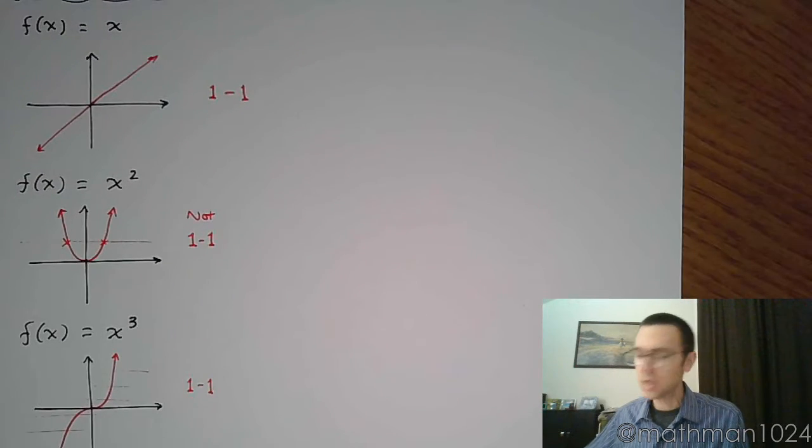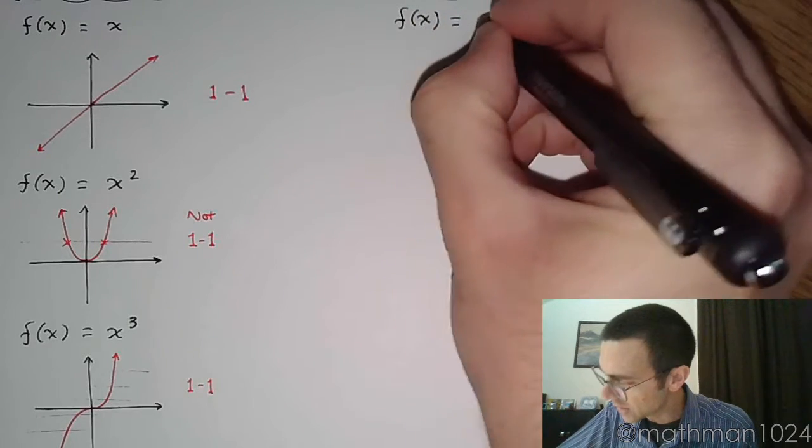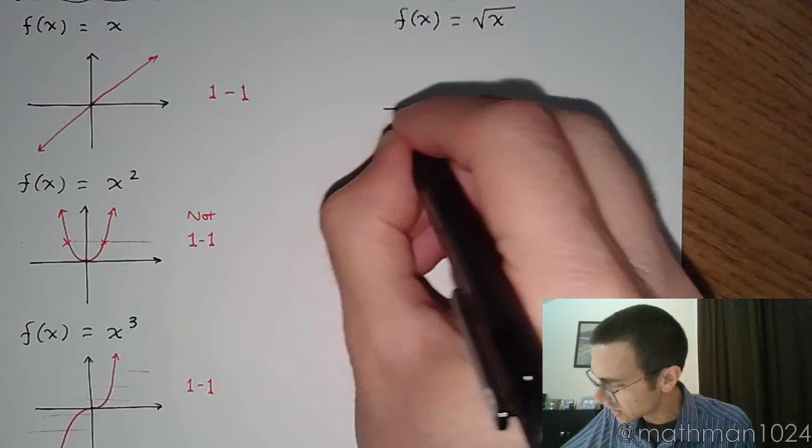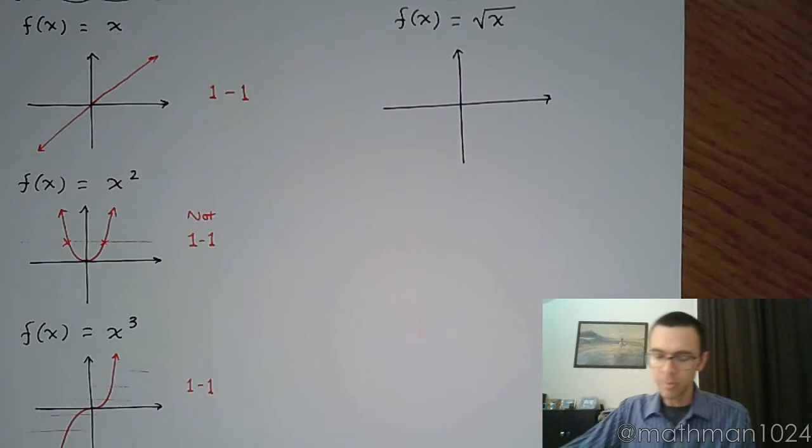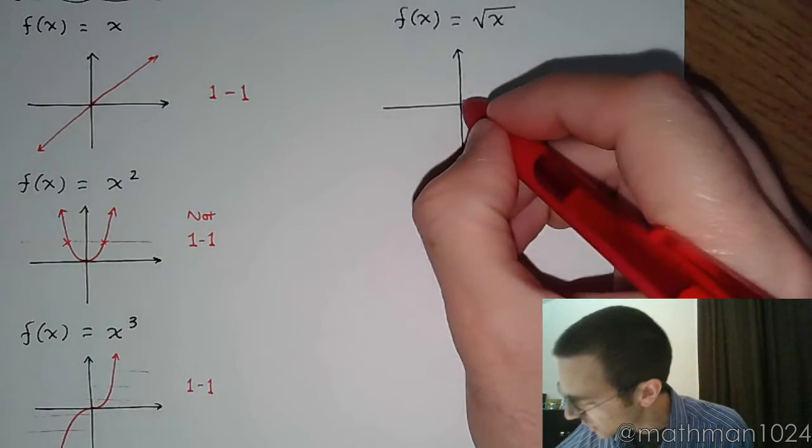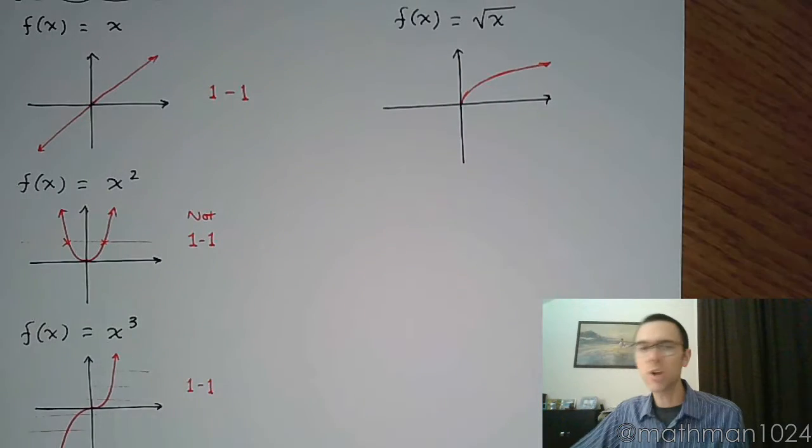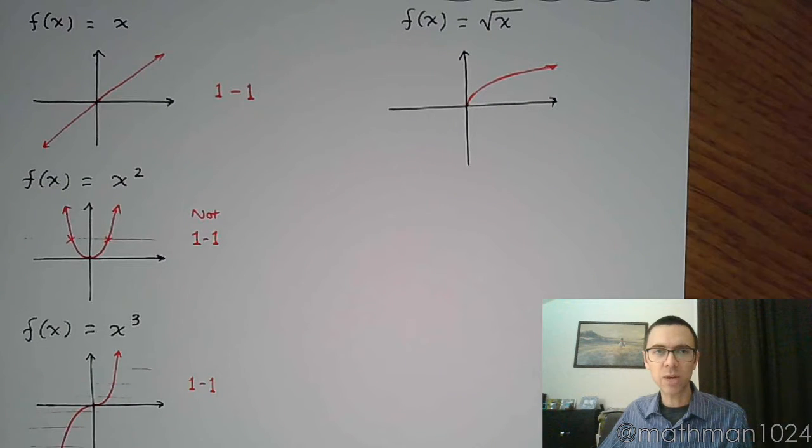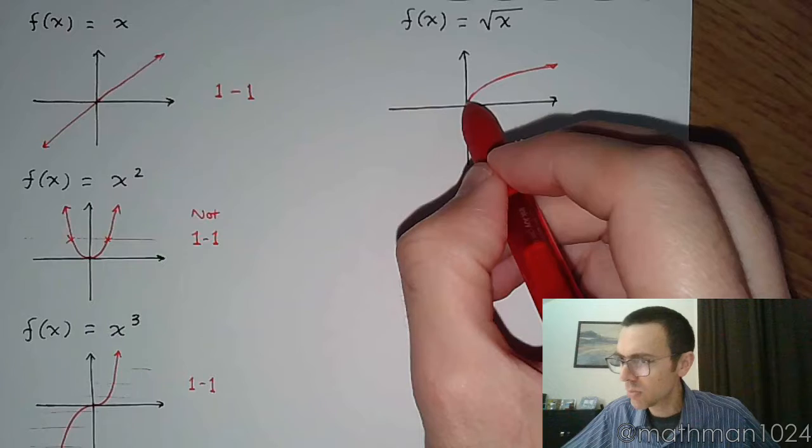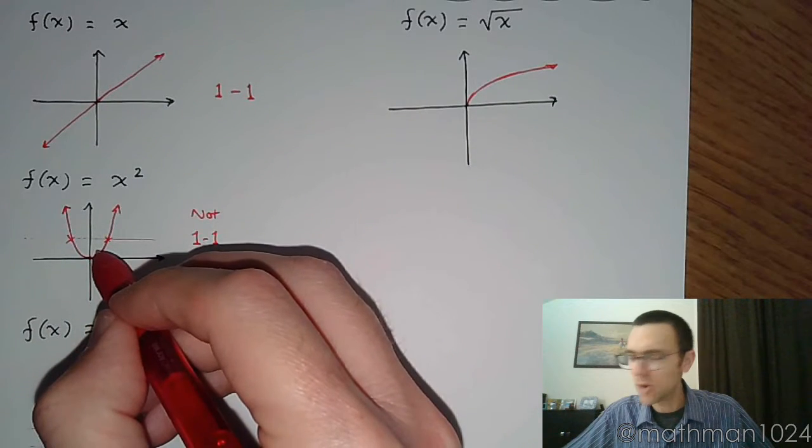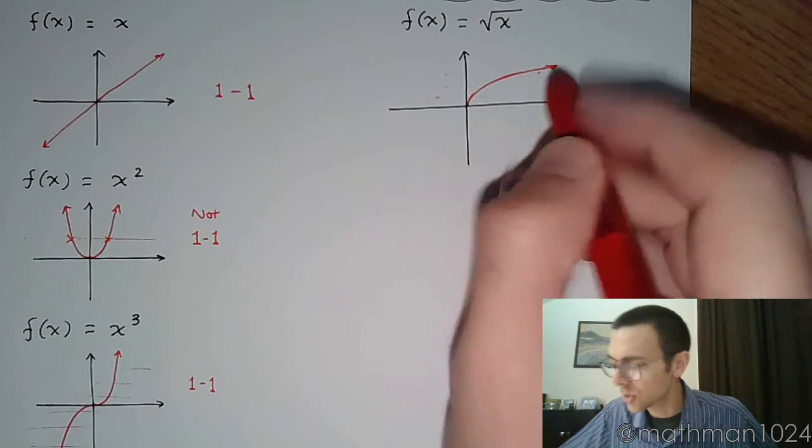Next up is your square root function, f(x) equals the square root of x. When I think about this shape, it's a little half sideways parabola - at least that's how we've been describing it this semester. Now notice I said a half sideways parabola, which means it's probably connected to the parabola somehow.